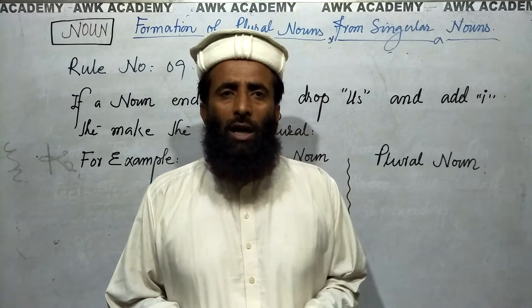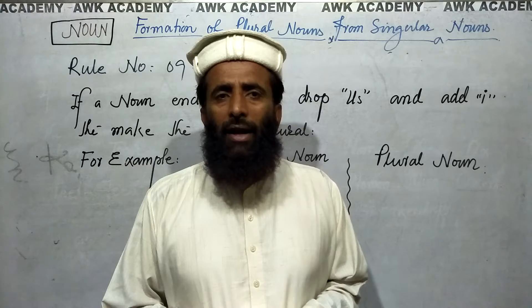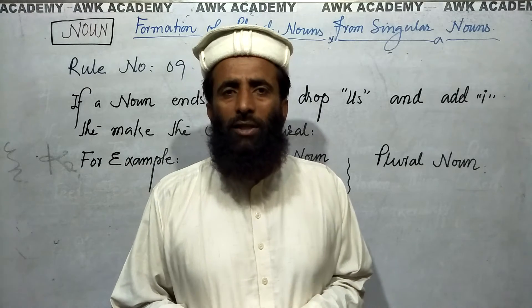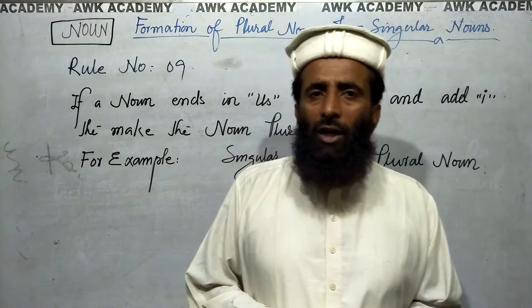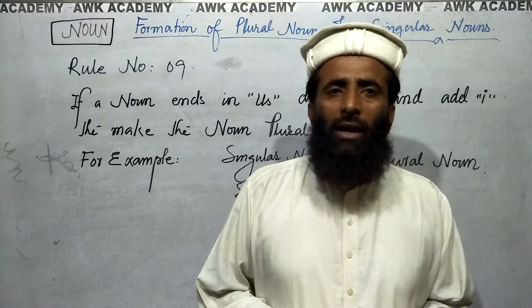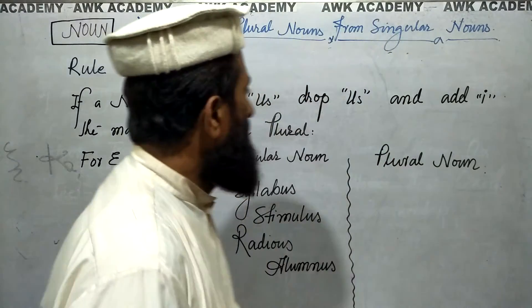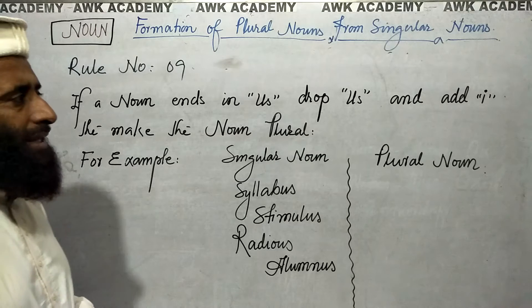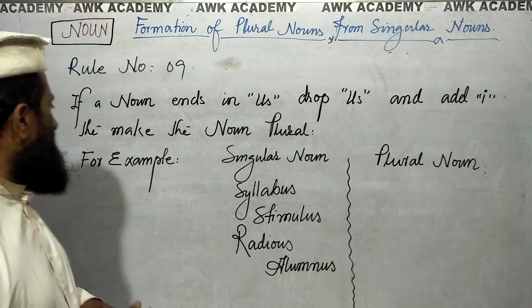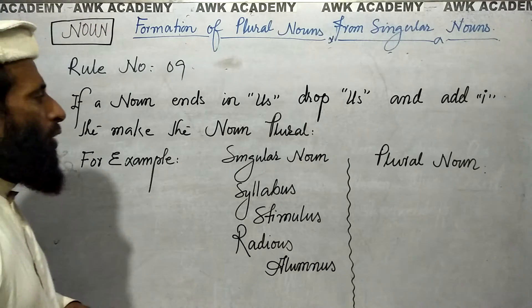In this rule, we are about to read that if a singular noun ends in 'us,' drop the 'us' and add only 'i' to make the singular noun plural. Rule number nine: if a noun ends in 'us,' drop 'us' and add 'i' to make the noun plural.